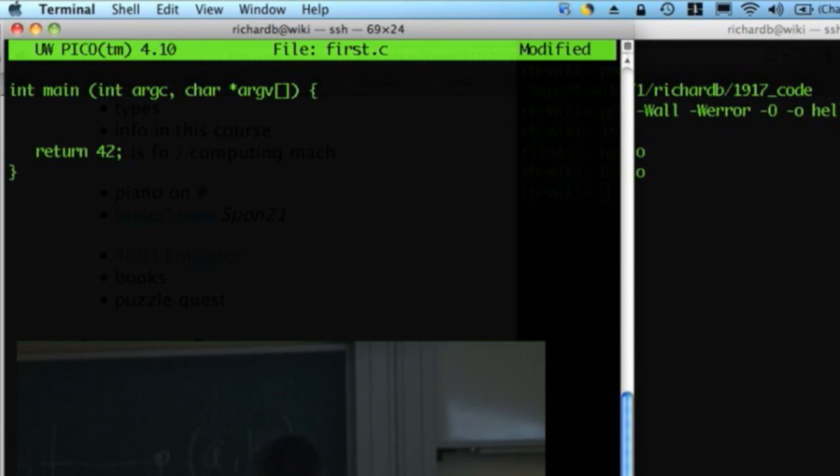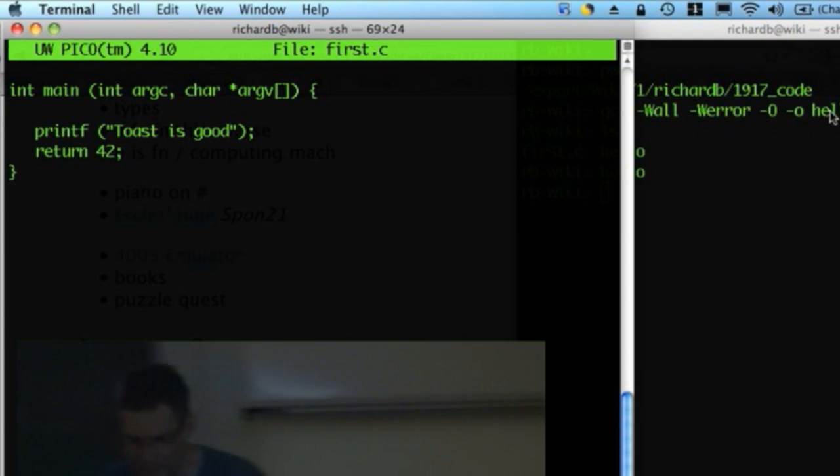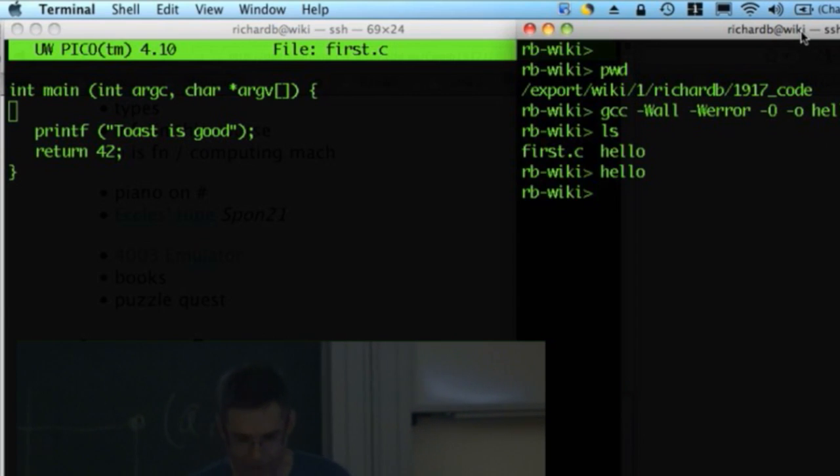So what if we wanted to print something out? What should we print out? Oh yeah, toast. Toast is good. Alright. Now, what's going to happen when I save this program? Printf is our command for printing things out. We'll see all this in detail next week. I just want you to get used to the whole how I write a program how I compile it thing. The meaning in the C we'll look at all in the C next week.